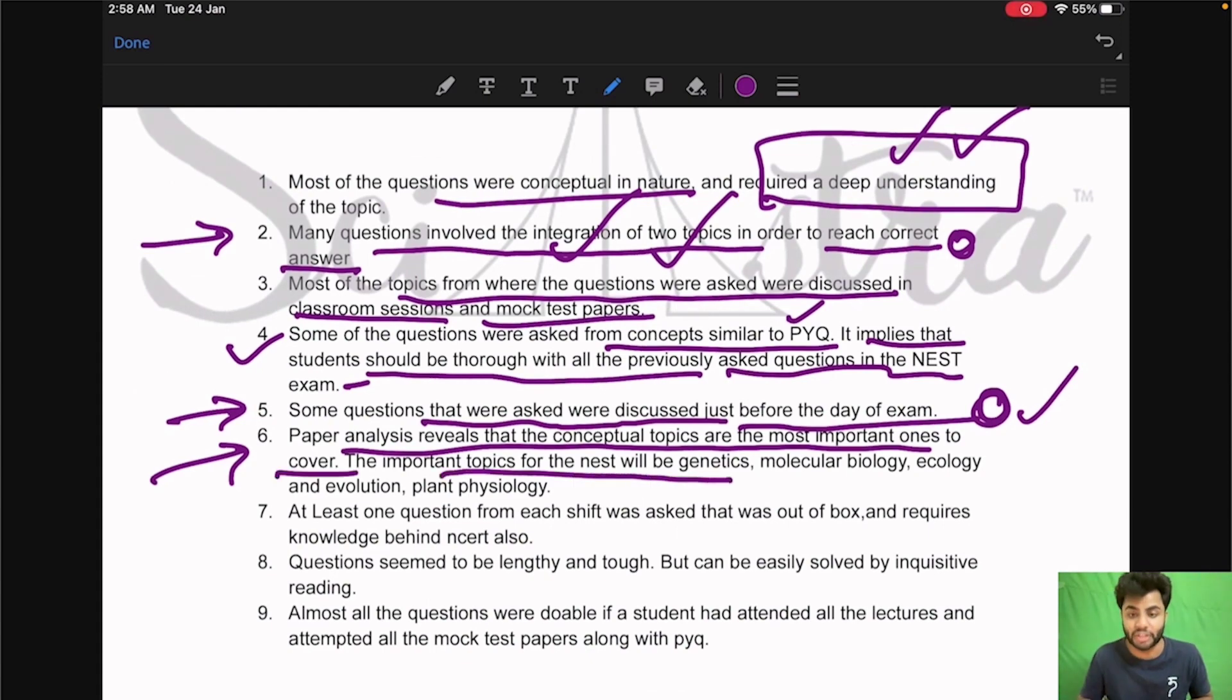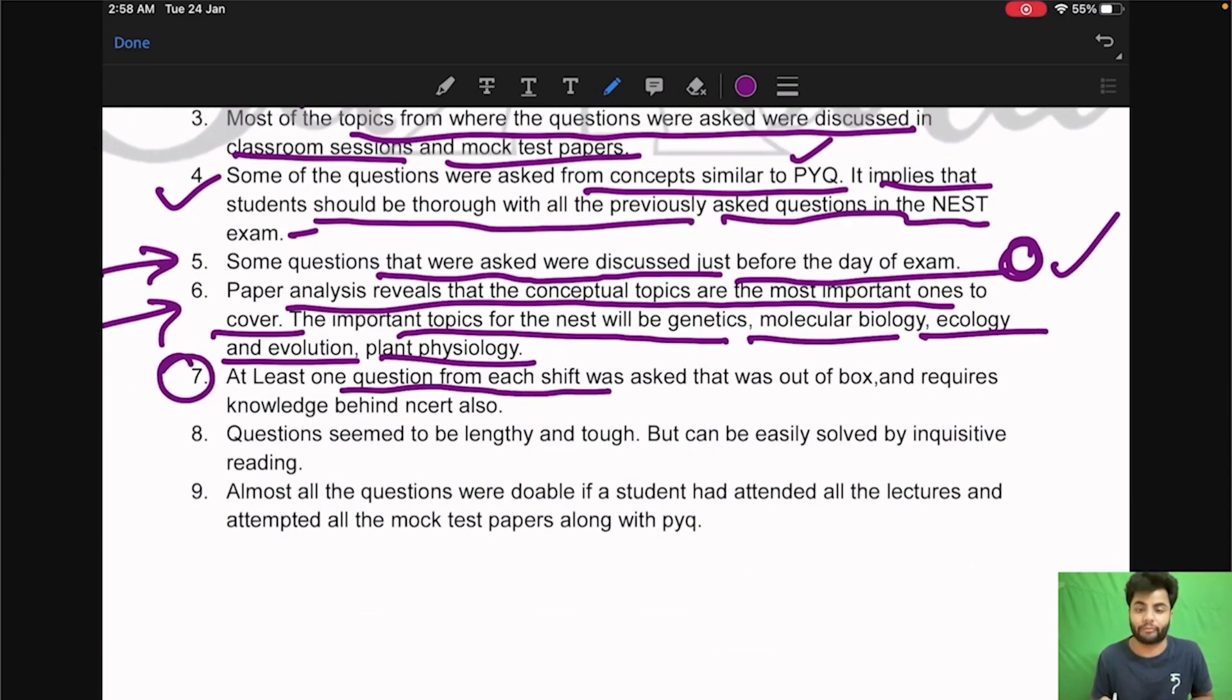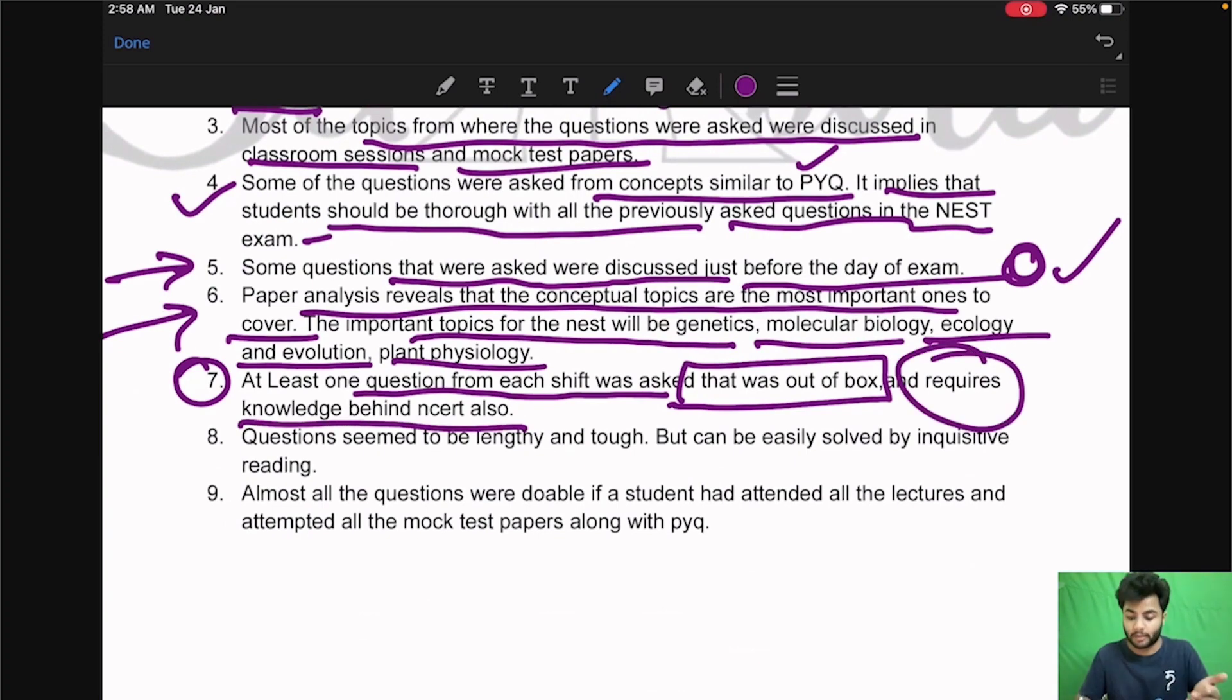Coming to paper analysis reveals that conceptual topics are the most important ones to cover. The important topics of NEST will be genetics, molecular biology, ecology and evolution and plant physiology. Then at least one question from each shift was out of box. Basically at least one question in the each shift was out of the box and requires knowledge behind NCERT also. Basically what it means is that at least one question was there in each shift which required out of box thinking your knowledge beyond NCERT.